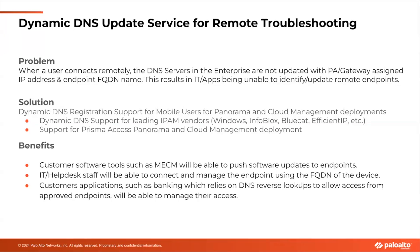However, when a user connects via Global Protect to Prisma Access, Prisma Access will assign a client IP to the VPN interface. In that case, most DNS servers won't get updated with the Prisma Access gateway-assigned IP address. Therefore, IT and in-house applications won't be able to identify or make updates to the remote endpoints.